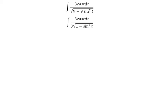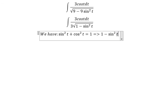Next we have the formula: sine t squared plus cosine t squared equals to number 1. And in here we have 1 minus sine t squared, so we set 1 minus sine t squared equal to cosine t squared.